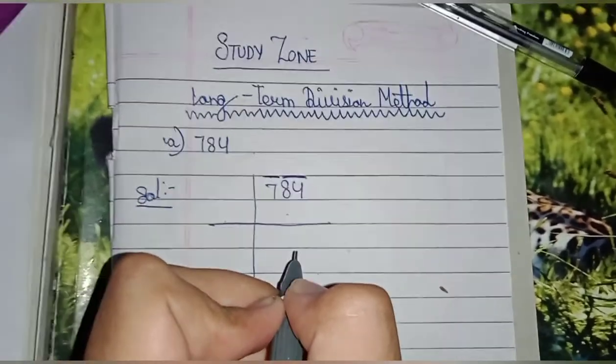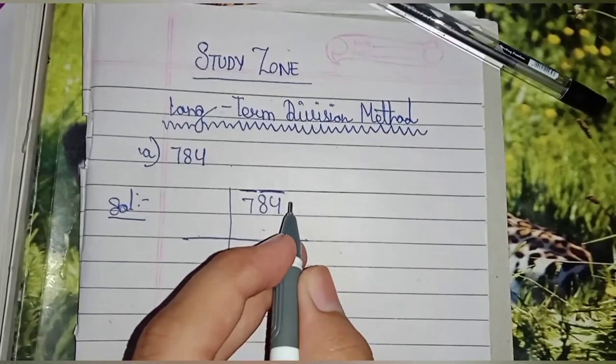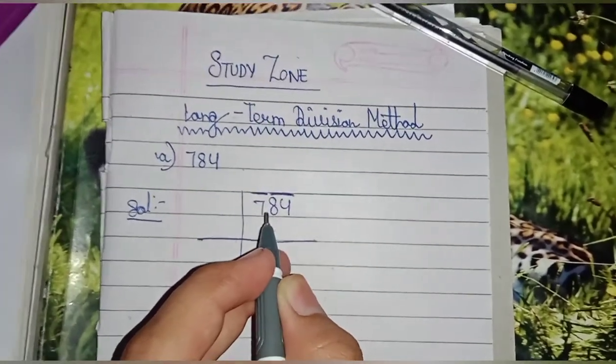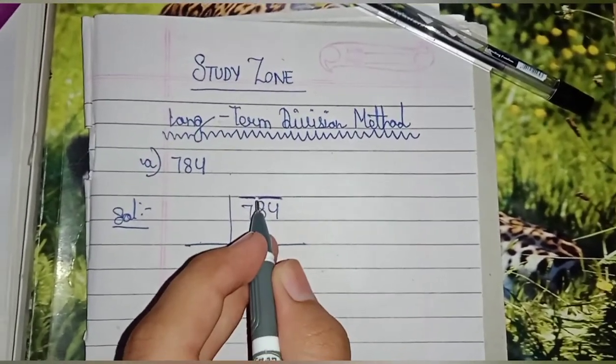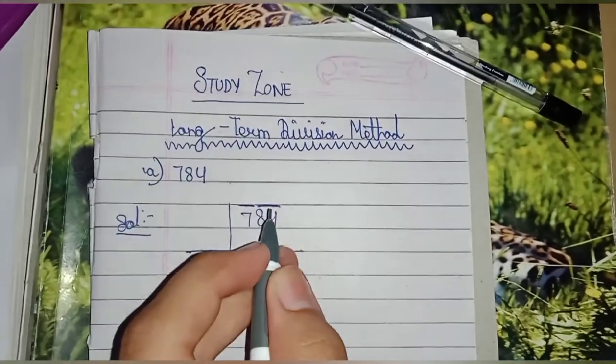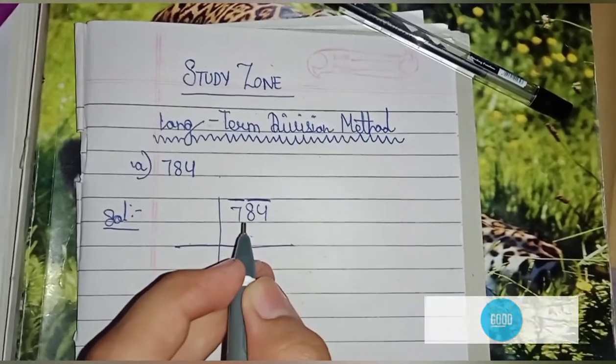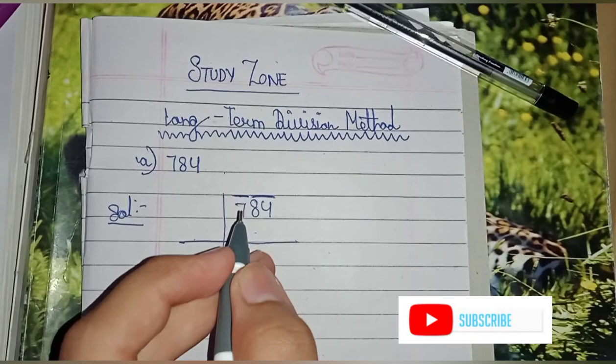So first we will try 2. 2 squared is equal to 4, which is less than 7, so it can work. But if we try 3, it will be 3×3 = 9, so it will not work. So we will write 2 here and here.